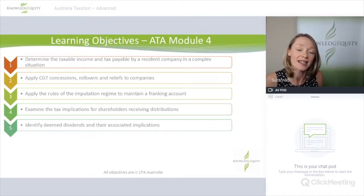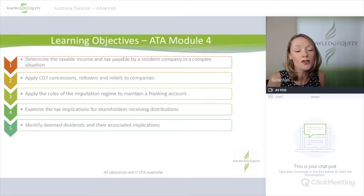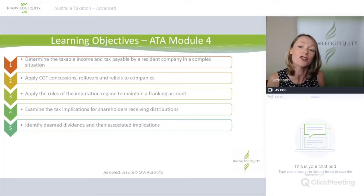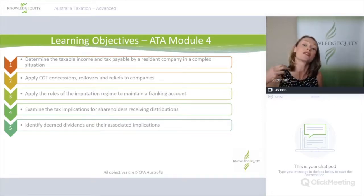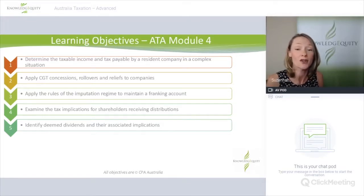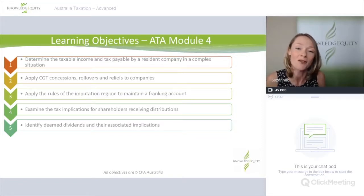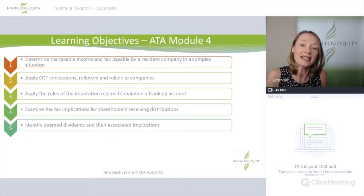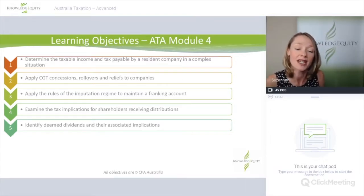The main CGT concessions we're dealing with are the very important small business CGT concessions, which can make a big difference to capital gains or losses arising at both the company and shareholder level. We also have various rollovers that we'll mention briefly if you decide to rearrange your corporate structure — they can avoid any CGT liability arising. Learning objective three is to apply the rules of the imputation regime to maintain a franking account.